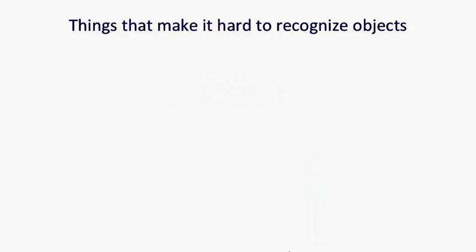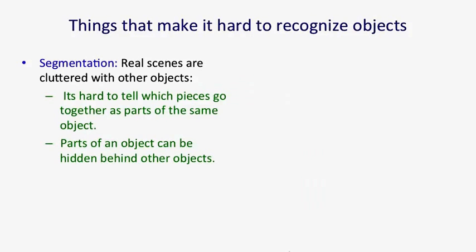There are many reasons why it's hard to recognize objects in images. First of all, it's hard to segment out an object from the other things in an image. In the real world, we move around, and so we have motion cues. We also have two eyes, so we have stereo cues. You don't get those in static images. So it's very hard to tell which pieces go together as parts of the same object.